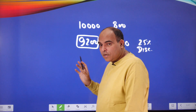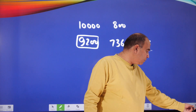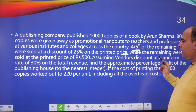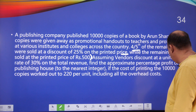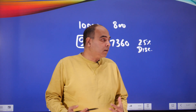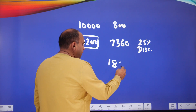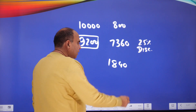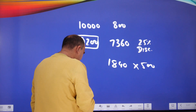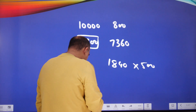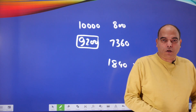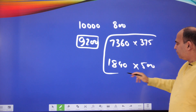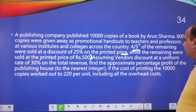We haven't got the printed price yet, so we continue reading. The remaining one-fifth — that's 1,840 copies — were sold at the printed price of ₹500. So now we know: 1,840 units are sold at ₹500 each, while 7,360 units are sold at a 25% discount on ₹500, which is ₹375.